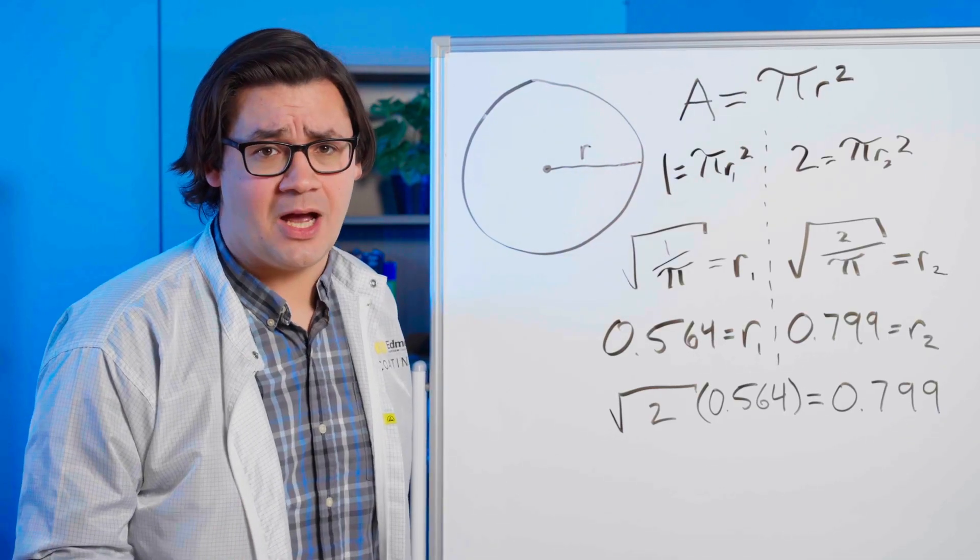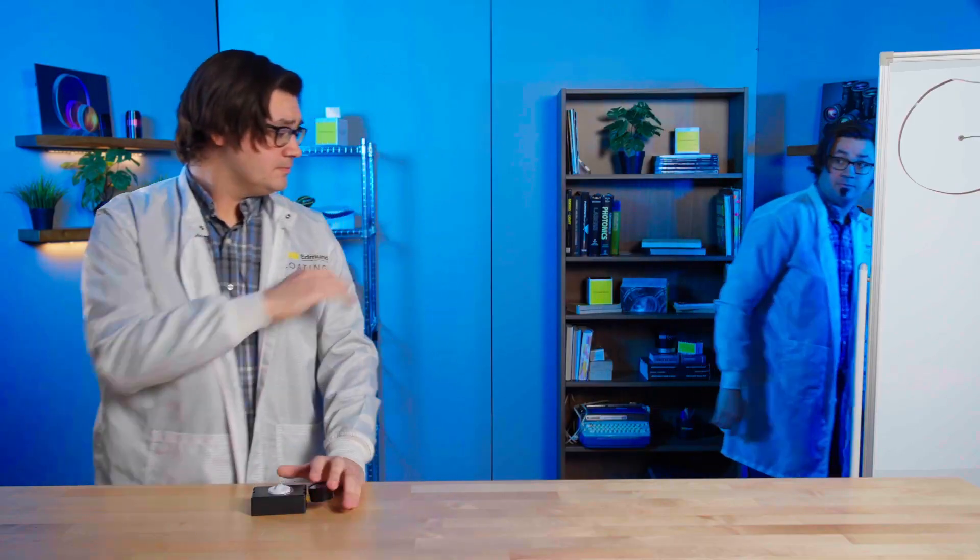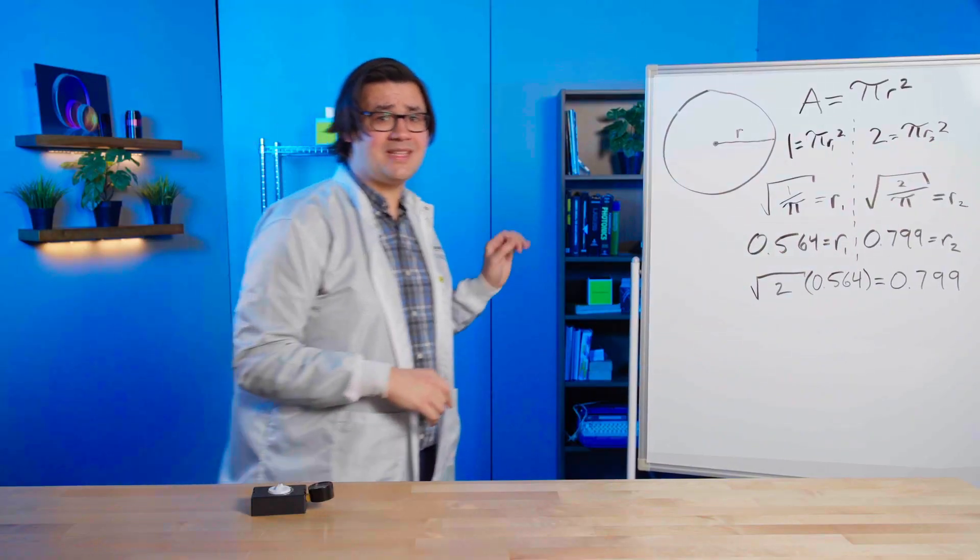But we aren't here to talk about geometry. We're here to learn how F-Number influences our image. As we drive our F-Number up, we'll see the following: our diffraction limit, which is our theoretical max for resolution, will decrease along with our light throughput, requiring a longer exposure, while our depth of field will increase. You'd expect this increase in F-Number, which will drive our theoretical resolution maximum down, to drive our actual performance down. But that's not always the case.